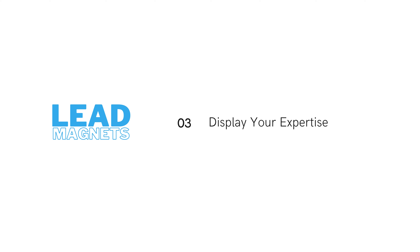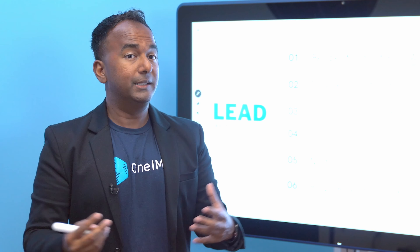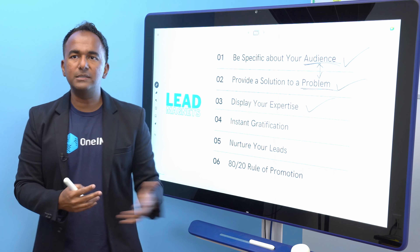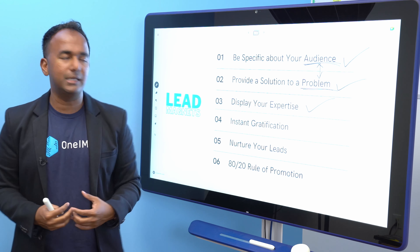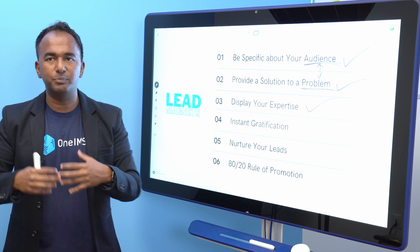If you sell to three different industries, making one lead magnet for all three makes it too watered down — it's not relevant, won't really solve any problem, and they probably won't come back to download anything else. Content is the variable. In that process, you're actually selling. They trust you enough to give you their information, hoping your expertise will come through. In other words, you're gonna teach them something they didn't know.